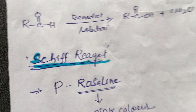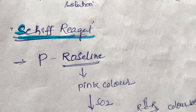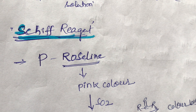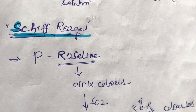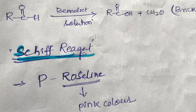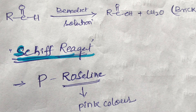Schiff's reagent — para-rosaniline — is pink in color. It oxidizes only aldehydes and cannot oxidize ketones. These are the mild oxidizing reagents.